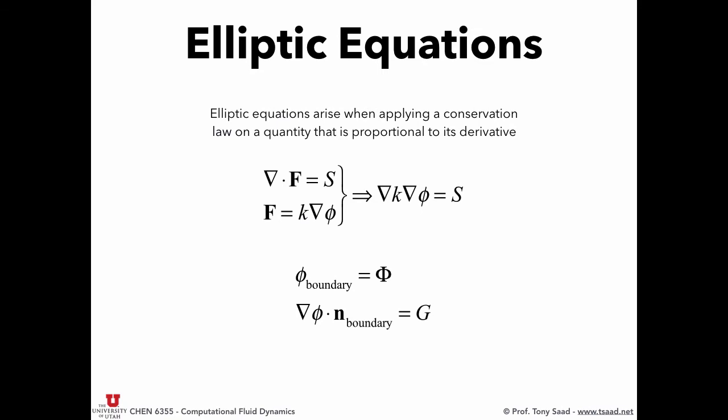Typically, linear systems that we deal with in CFD, the first linear system you deal with is the elliptic equation for the pressure. And in general, elliptic equations arise when you apply a conservation law on a quantity that is proportional to its gradient. So the conservation law tells you that the net flux is equal to something, but then the flux is proportional to the gradient of a quantity, so therefore you end up with a div k grad phi, which is an elliptic equation.